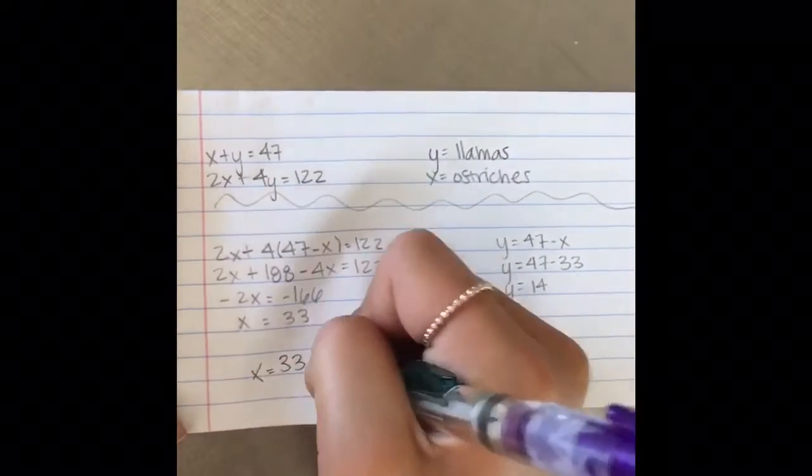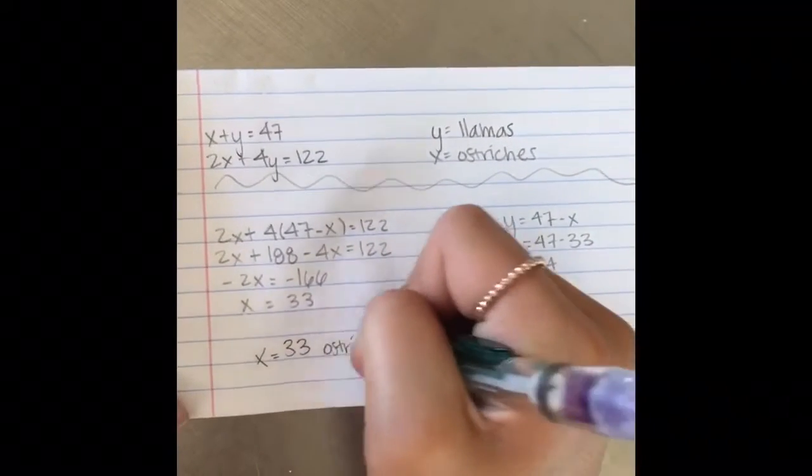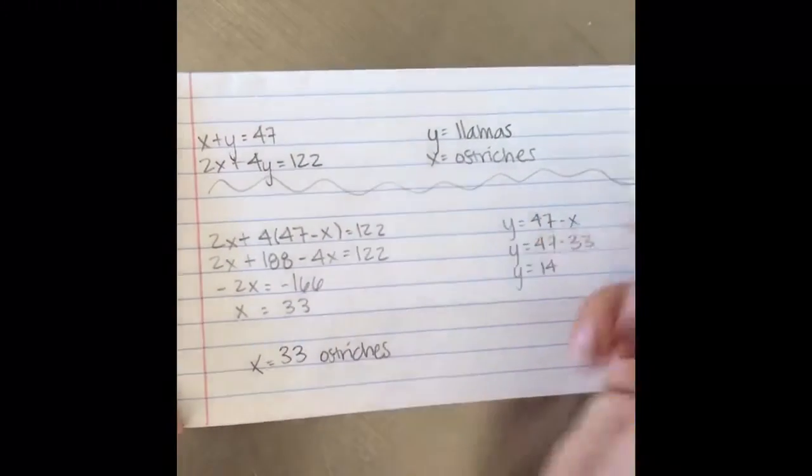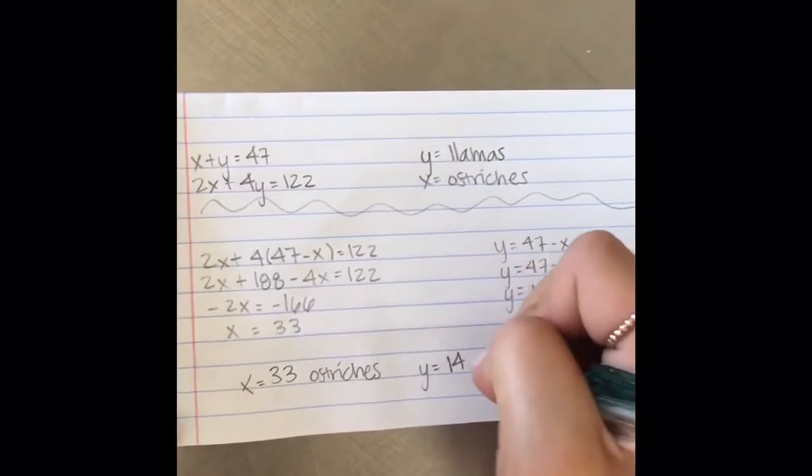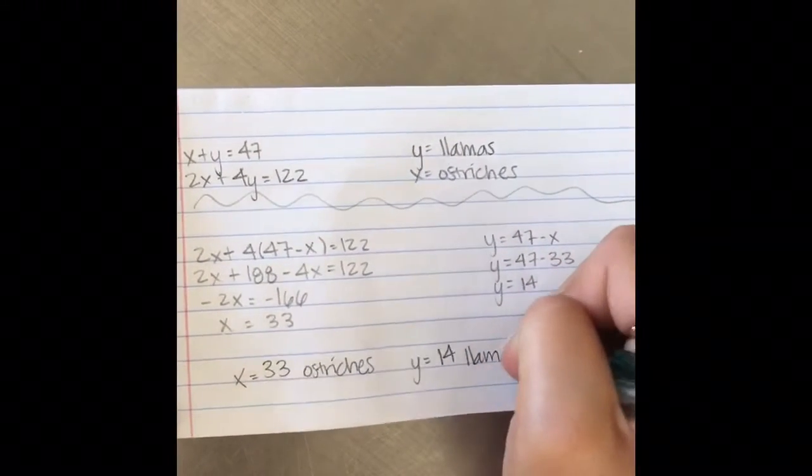In the end, there are 33 ostriches and 14 llamas. Then, we changed the image. Then, y equals 46. Thank you.